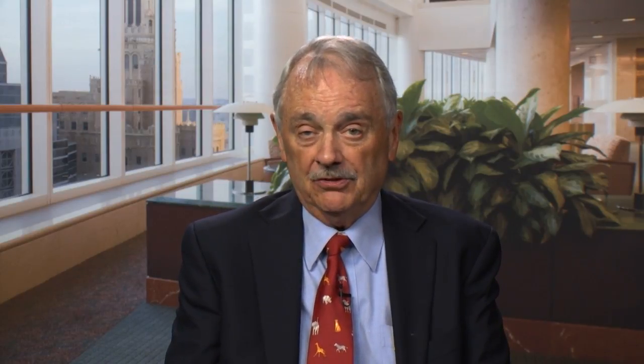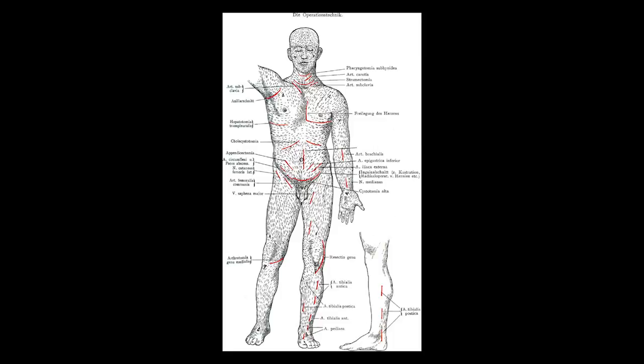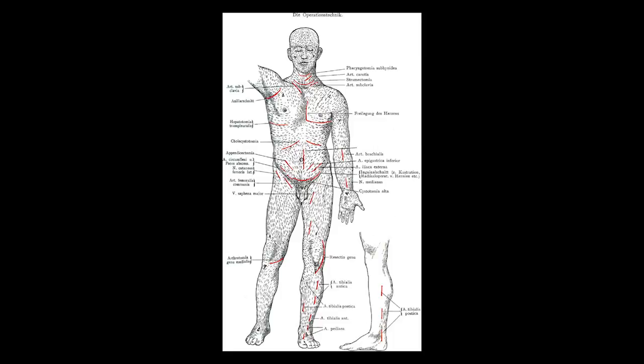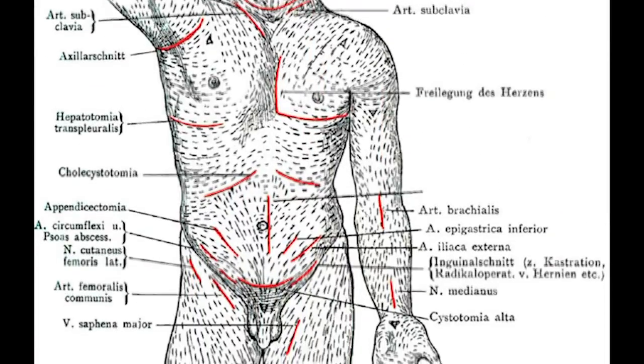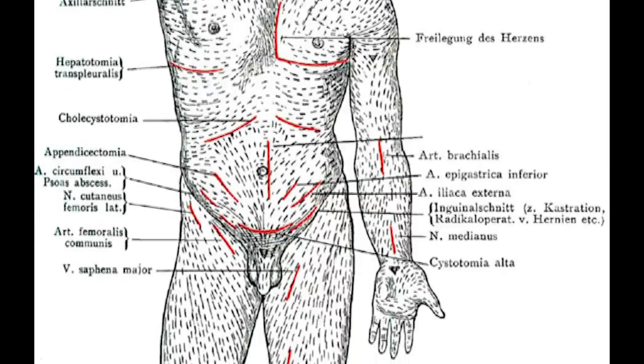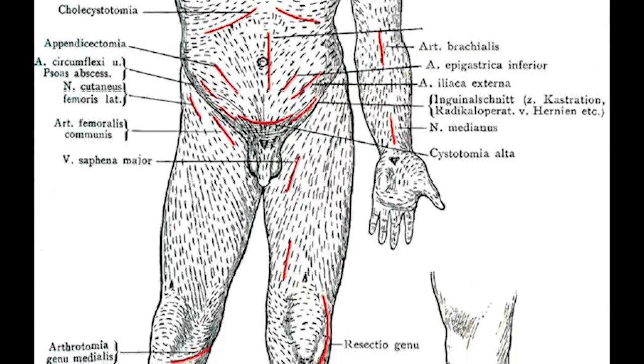What Langer did do was make multiple stab wounds into cadavers with a round tool — cadavers of various ages and various body habituses — and mapped out the patterns made by the resulting ellipses. The maps that he made are what we now call Langer's Lines. Langer and others appreciated the relationship between these lines and surgical incisions.